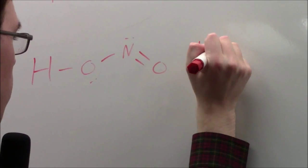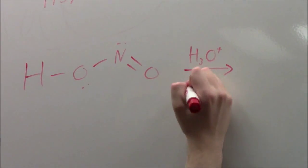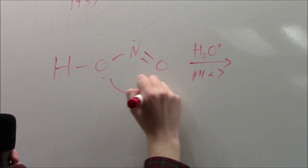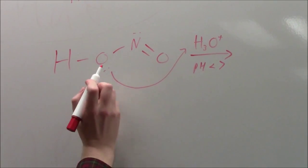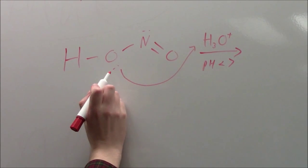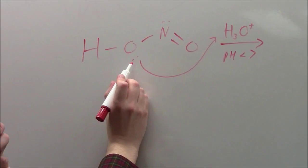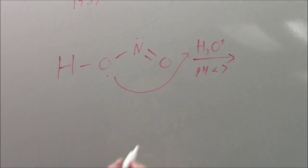So first off, since this is an acid with pH less than 7, there are hydronium ions around, and the lone pair on the oxygen in the alcohol of the nitrous acid will remove a proton from a hydronium ion.